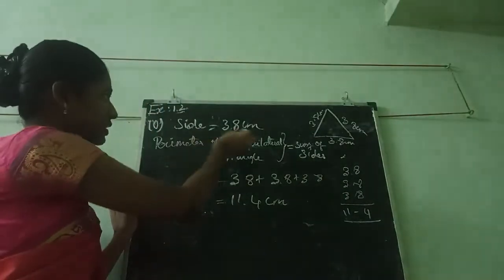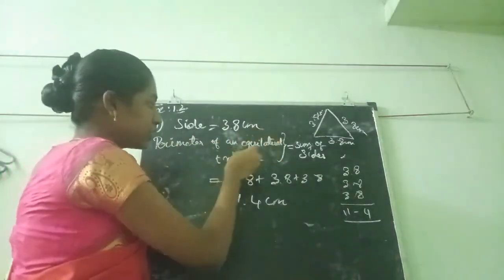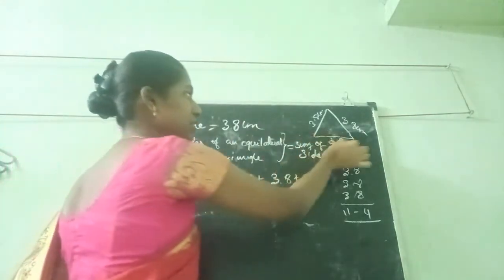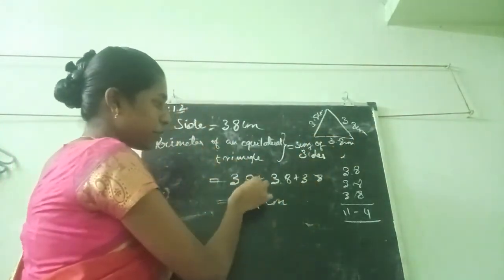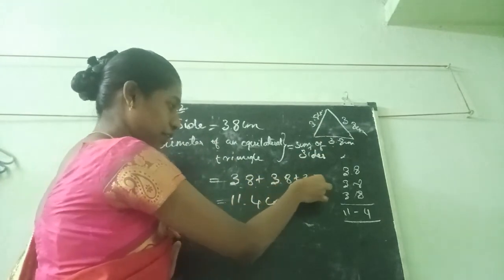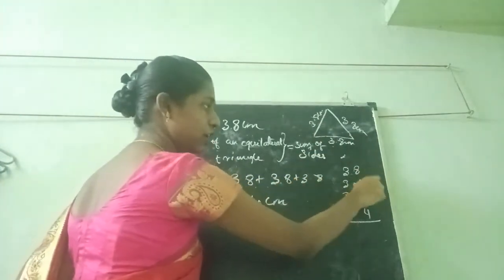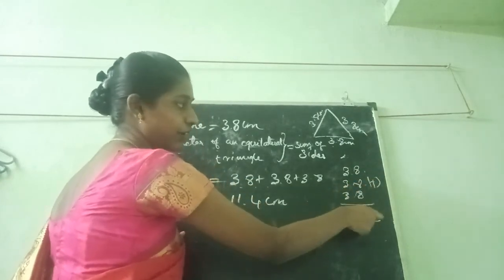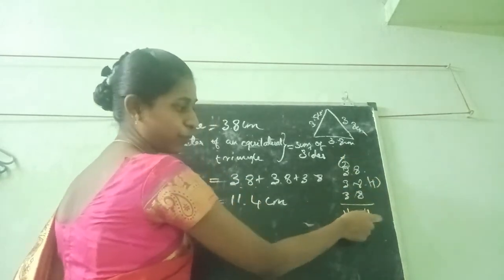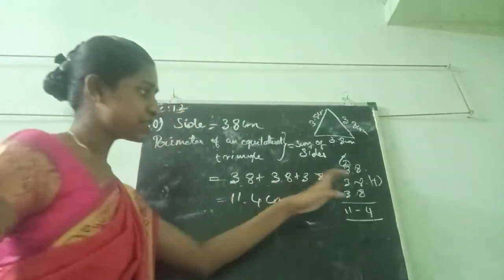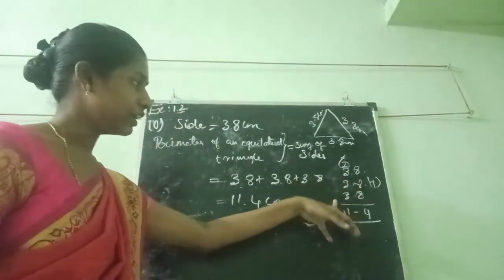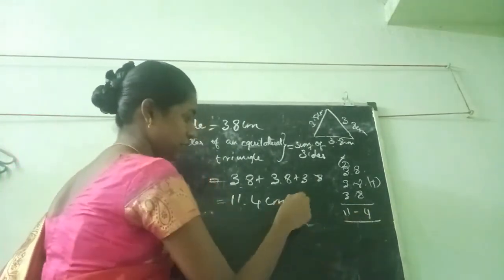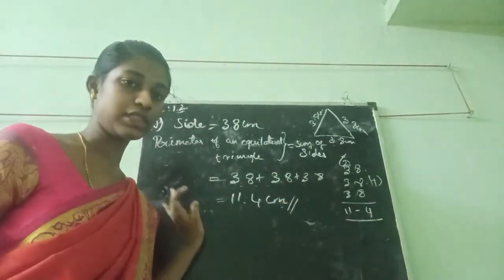Now I am writing. Perimeter of an equilateral triangle means sum of all sides. We want to add these 3 sides: 3.8 plus 3.8 plus 3.8. I am doing addition: 8 plus 8 is 16, plus 8 is 24 — write 4 carry 2. Then 3 plus 3 is 6, plus 3 is 9, plus 2 carry is 11. That means the answer is 11.4 cm. This is the answer for the 10th sum. All of you understand?